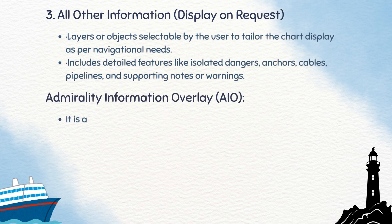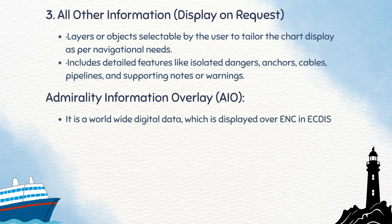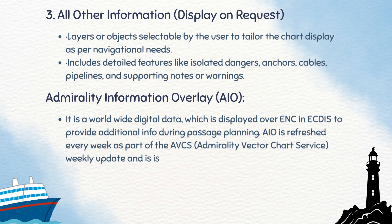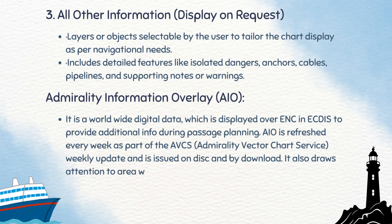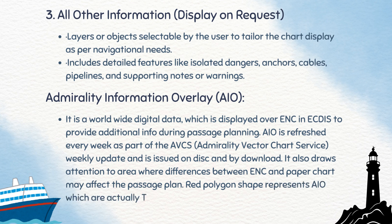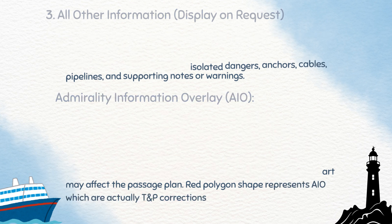Finally, the Admiralty Information Overlay, or AIO. This is a worldwide digital data layer displayed over ENCs in ECDIS, providing additional information during passage planning. The AIO is refreshed every week as part of the Admiralty Vector Chart Service updates and can be received on disk or by download. On ECDIS, the AIO is shown as red polygon shapes, which correspond to temporary and preliminary corrections, highlighting areas where differences between ENCs and paper charts may affect the passage plan.